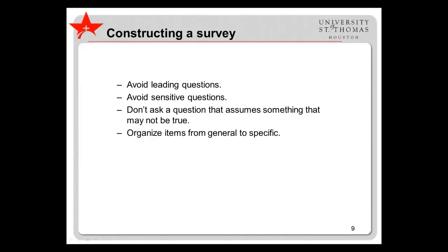Additional guidelines include avoiding leading questions — things that imply that there is a correct answer. Avoid overly sensitive questions about highly personal topics, as these can be a turn-off for participants. Don't base questions on false or questionable assumptions. For example, asking 'How long have you been married?' without giving an option for participants to indicate that they are not married would be based on an assumption that all participants are married. Finally, organize items from general to specific, to introduce the survey in broader terms before going into highly detailed questions.